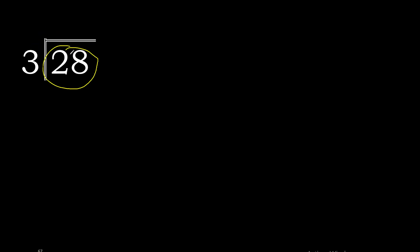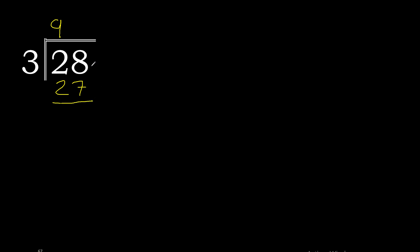28 divided by 3. 2 is less than 3, therefore join 28. 28 is not less than 3, therefore with 28: 3 multiplied by 9 is 27. 27 is the closest. 28 minus 27 is 1.